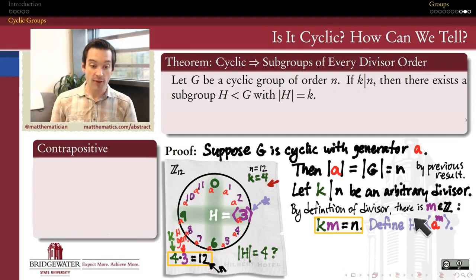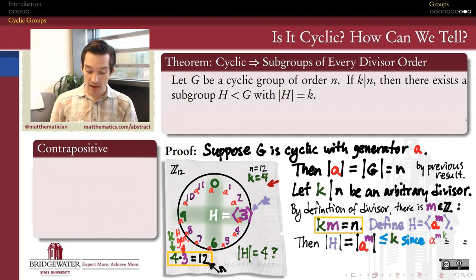Now, all we have to do is check that the order of this subgroup is what we claim it to be. Namely, the order of this subgroup needs to be k. The order of any cyclic group is the same thing as the order of its generator. That is another fact we knew from before. It's going to be the same as the order of the element a to the m.